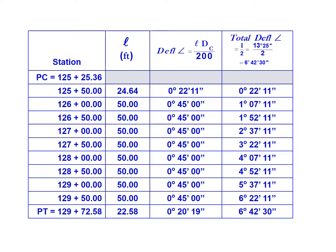Our next column over we're going to calculate those incremental deflections: L multiplied by the degree of curve divided by 200. Our first and last will be different. All the ones in the middle will be equal to each other: zero degrees, 45 minutes, zero seconds.